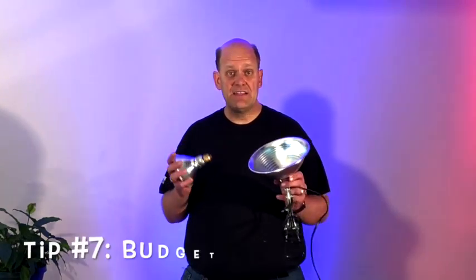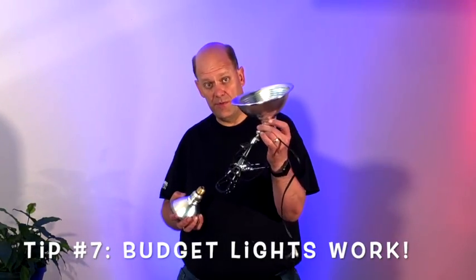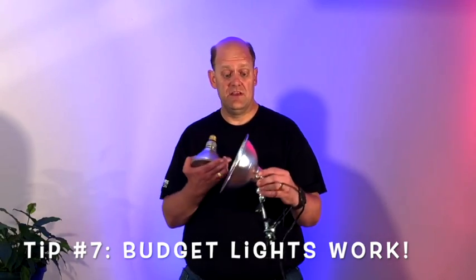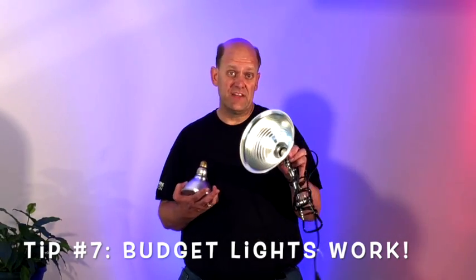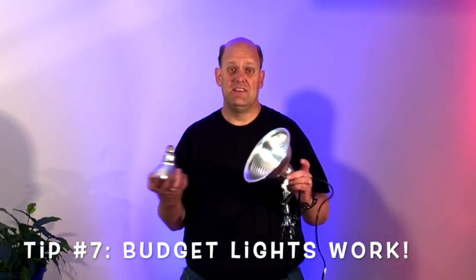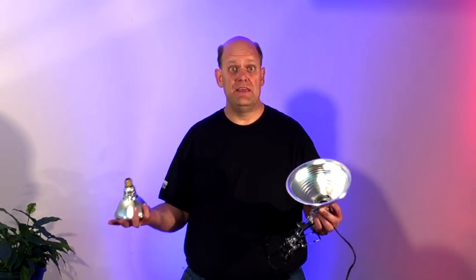Not everybody has the budget to do massive productions. It doesn't matter. So we use what we have. A lot of times you can go to Lowe's, Home Depot, whatever, and grab one of these little reflector scoop lights that they have just sitting on the shelf. It can be anything. Take a floodlight and put it in there.